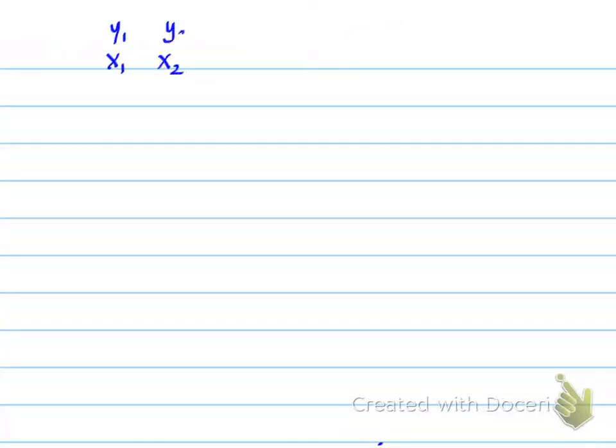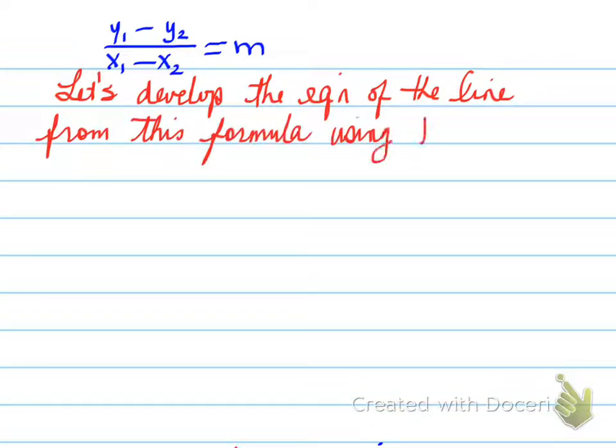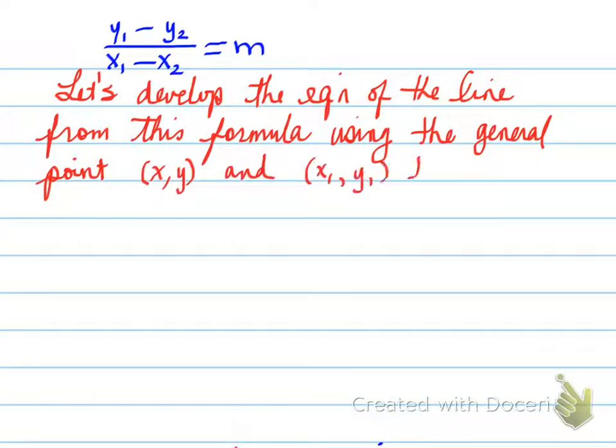All right, so we have our slope, y2 minus y1, or y1 minus y2 over x1 minus x2. And what we're going to do is develop the equation of the line from this formula, using the general point x and y, and x1, y1 from the slope formula. So, we're going to use those two points. So we're going to use x and y, and x1, y1 as our points.